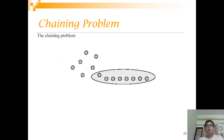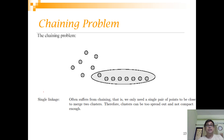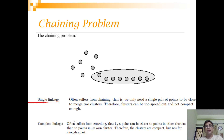There are two notable problems to discuss. First is the chaining problem: when using single linkage, clusters can be very skewed, with one point merging with another and that with another, forming a chain. Second is the crowding problem: a point can be closer to points in another cluster than to points in its own cluster, meaning the clusters are compact but not far enough apart — separability is compromised. Crowding happens with complete linkage.